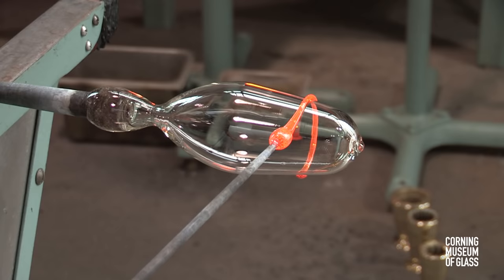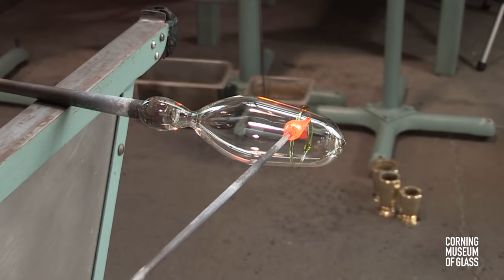A small amount of aqua glass is touched to the side and trailed around to form a ring. This is done again, and the two are reheated together.